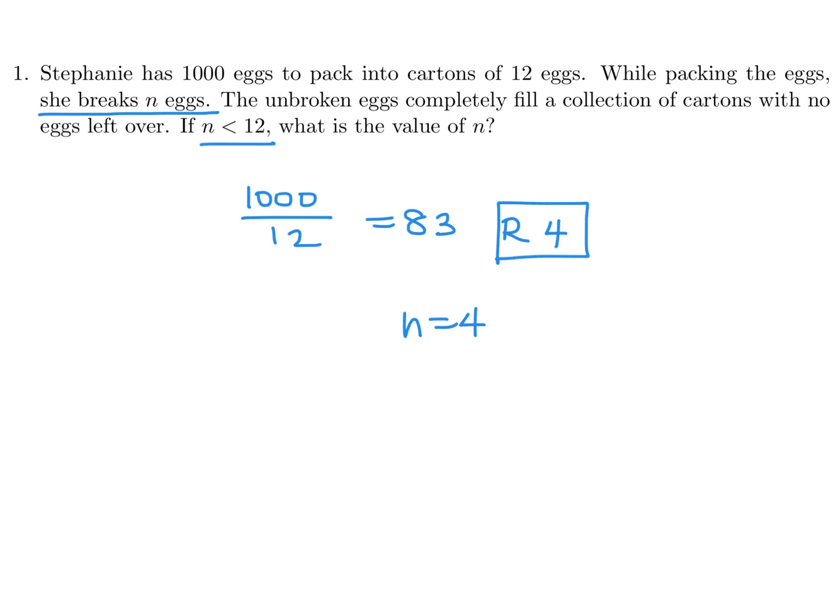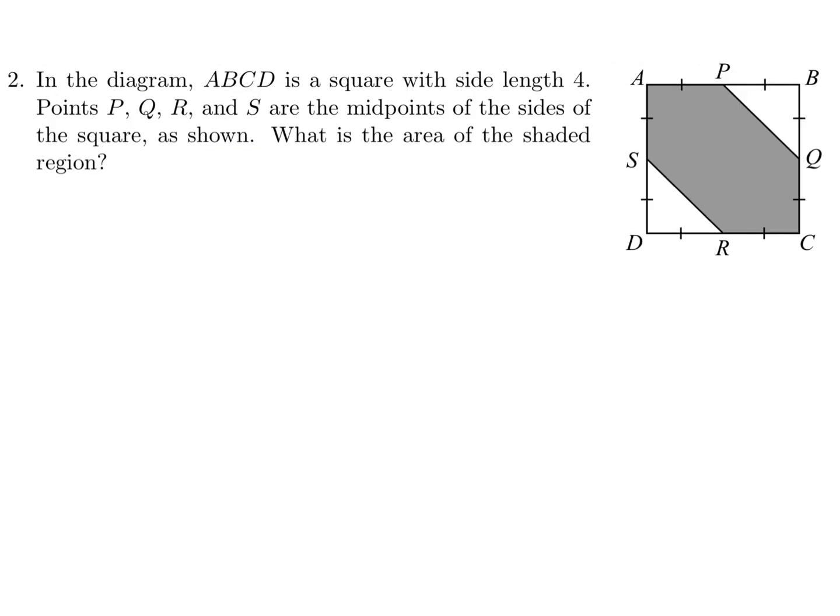In the diagram, ABCD is a square with side length 4. Points P, Q, R, S are the midpoints of the sides of the square as shown. What is the area of the shaded region? The full square will be 4 times 4, and then subtract from that two of those triangles.